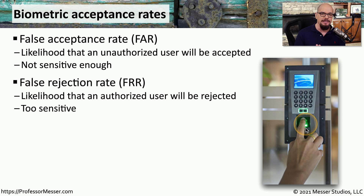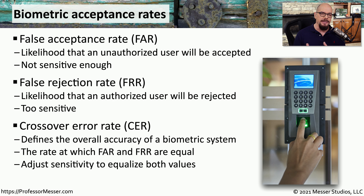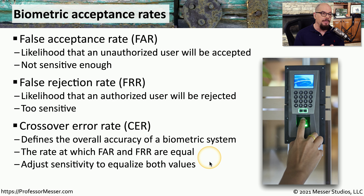So it's common to decrease the sensitivity of the biometric system to reduce the number of false rejections. Somewhere in the middle of those two is a sweet spot called the crossover error rate, or CER. This is where we have minimized both the false acceptance rate and the false rejection rate, effectively bringing both down to an equal level. There's some measurement between these two values that will work for your organization, and it's up to you to adjust the sensitivity of your biometric system to find that correct setting.